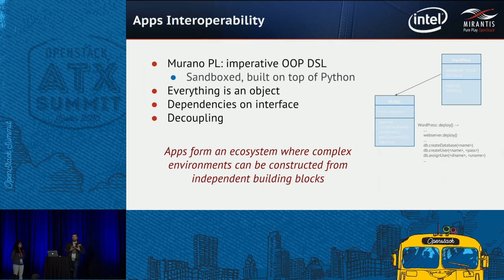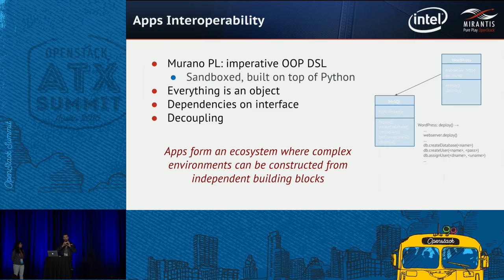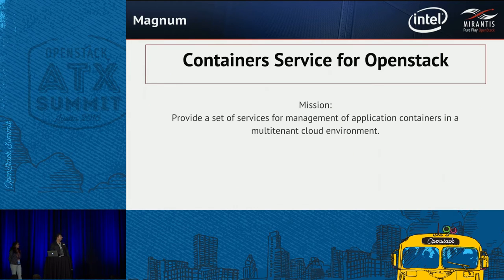Even when your application is running, you can continue using object-oriented design, making each piece of your application an object that can be used by other applications in the same stack. For example, a Kubernetes application is several objects that can be put in one package, and inheritors that extend this application can reuse them — deep decoupling through dependencies on interfaces. At this point I'd like to hand over to Madhuri for a bit of information about Magnum.